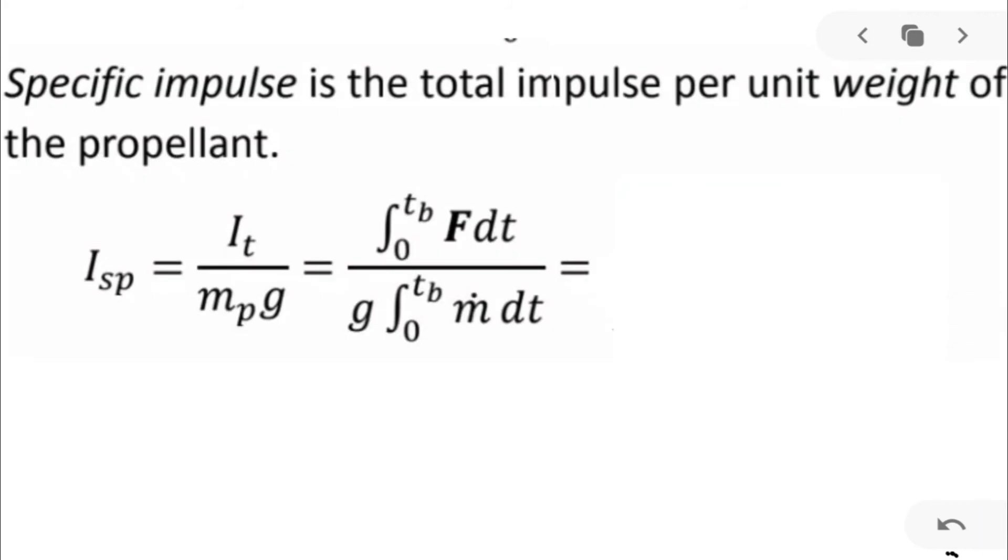Finally we are going to learn about specific impulse. Specific impulse is the ratio of total impulse to the weight of the propellant. This is total impulse and this is weight of propellant. We derived total impulse as thrust force integrated over burning time Tb and this is weight of propellant.